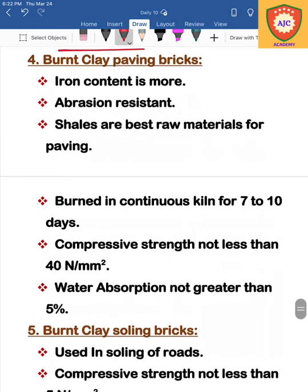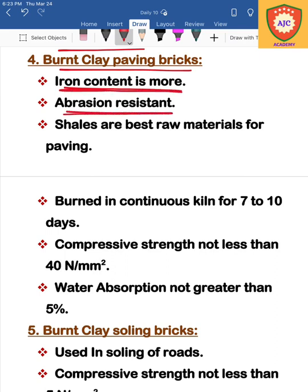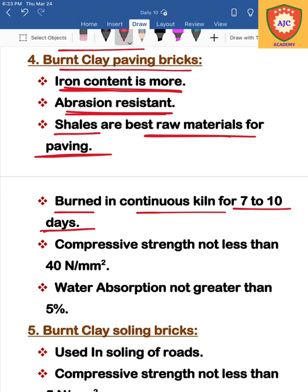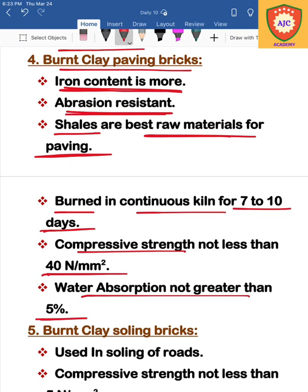The next type of brick is burnt clay paving bricks. Paving bricks are used where people walk, such as in garden areas or platform areas. The iron content provides abrasion resistance. Shale is used as the raw material and the bricks are continuously burnt for 7–10 days. Compressive strength is 40 N/mm² and water absorption capacity is 5%.